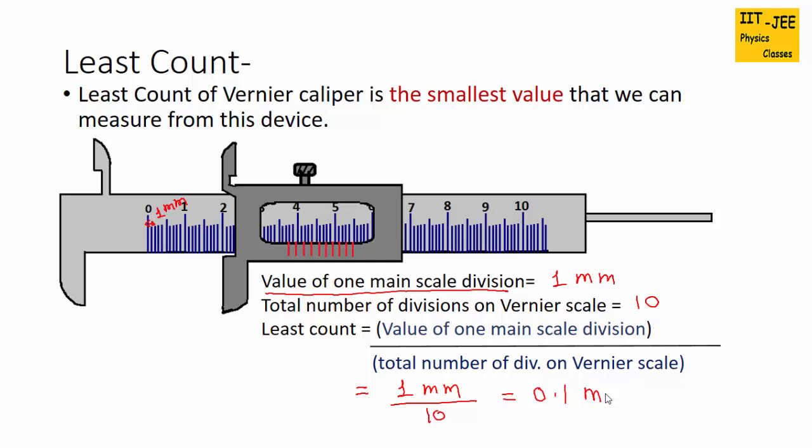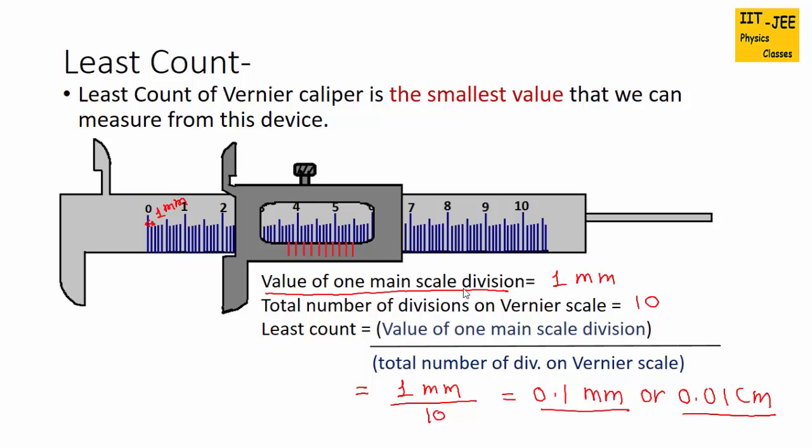We can also convert this value into centimeter. For that we need to divide this number by 10, which will give us 0.01 cm. So both are the least count of this vernier caliper. I hope you understand this topic. In the following videos we will discuss zero error and how to take measurements from vernier caliper. Don't forget to subscribe for daily updates. If you have any questions, you can ask in the comment box given below. Thank you.